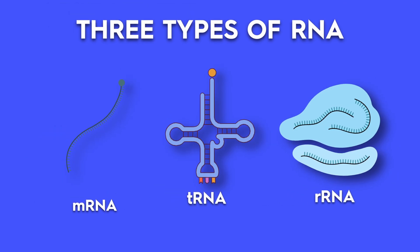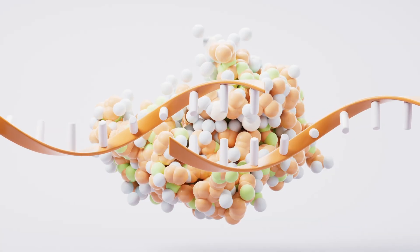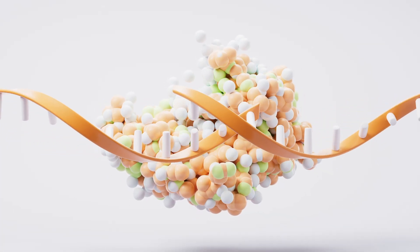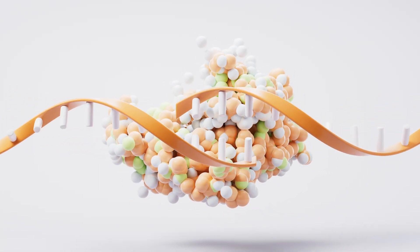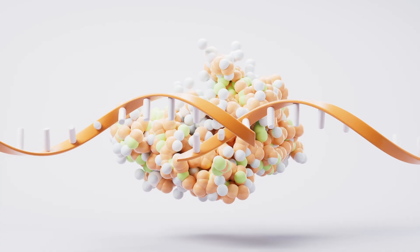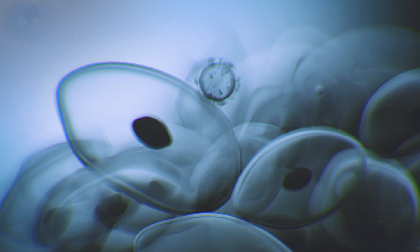Now that we've seen the three main types, let's step back to the bigger picture. RNA isn't just a helper. It's central to making proteins, regulating genes, and even serving as a genetic material in some viruses like the flu and COVID-19.